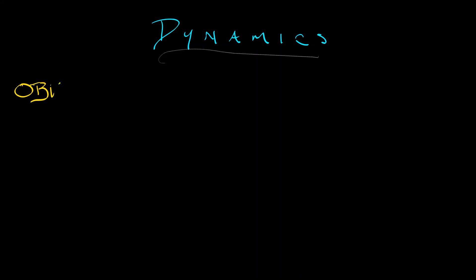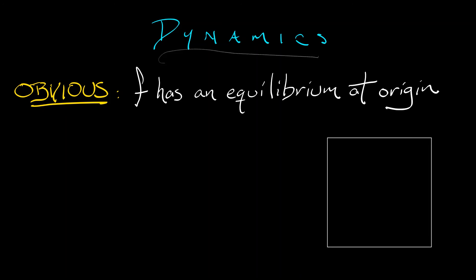There are a few things that are obvious. In particular, F has an equilibrium at the origin. If I think about it, remember that the lower left-hand corner of that square was at the origin, and in the forward application of the map, we're squeezing, stretching, bending over. Yeah, that origin remains fixed.